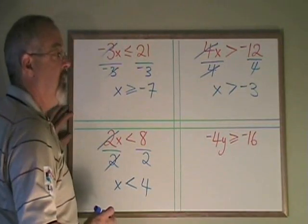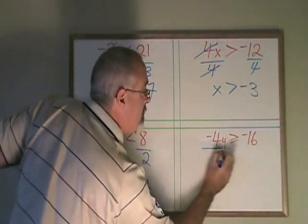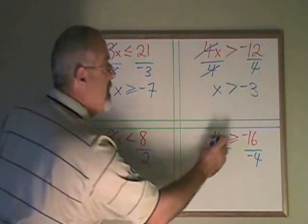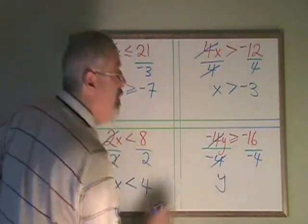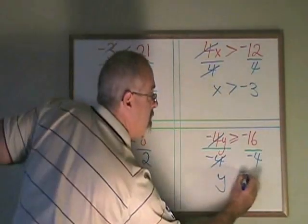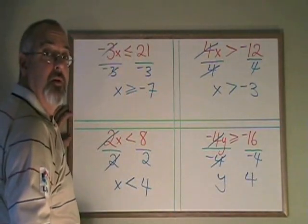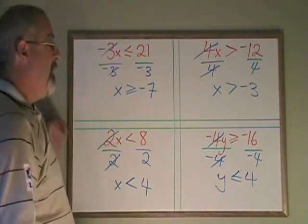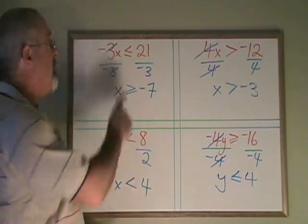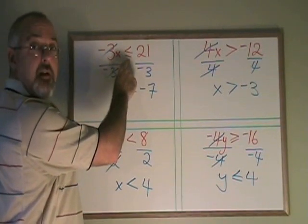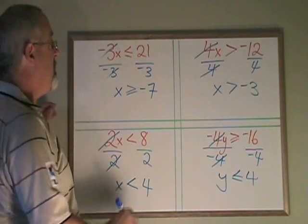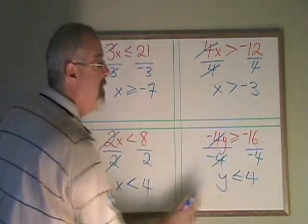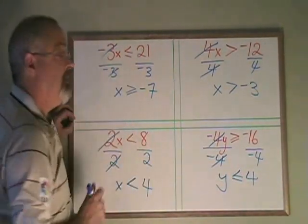Here, negative 4y is greater than or equal to negative 16. I must divide both sides of this inequality by negative 4 in order to cancel and isolate my y. Negative 16 divided by negative 4 is positive 4. But again, because I divided both sides by a negative number, I have to turn my symbol backwards. Whether we turn the symbol backwards or not has nothing to do with whether it has the little equal-to line under it — it only has to do with whether we are dividing both sides by a negative number. In the cases where we divided by a negative number, the symbol turned backwards.